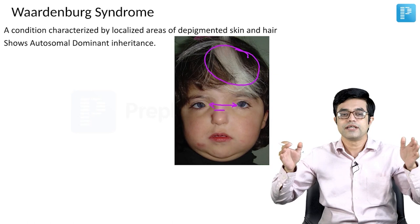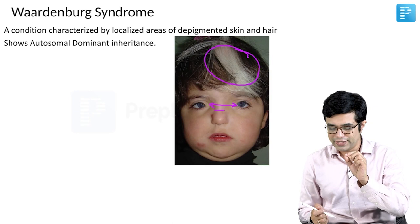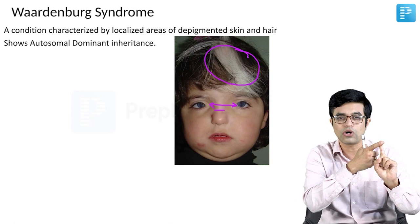In these patients, one of the eyes is more towards the center, so the interpupillary distance is normal — only the gap between the two canthi is more. We call it telecanthus. When you find a patient of Waardenburg syndrome, you will look for white forelock and increased gap between the medial canthi.